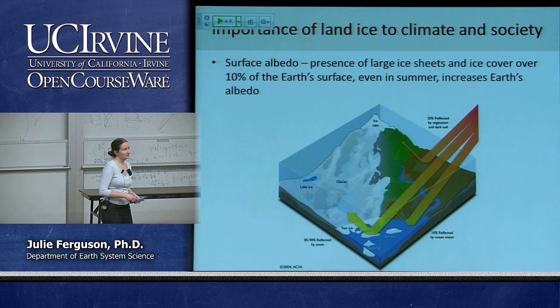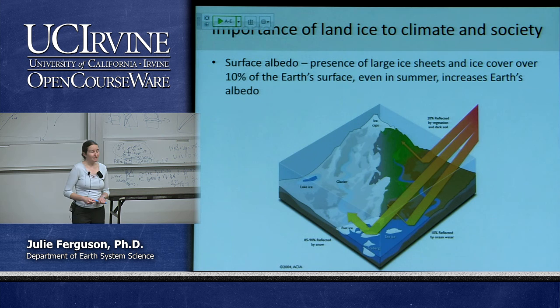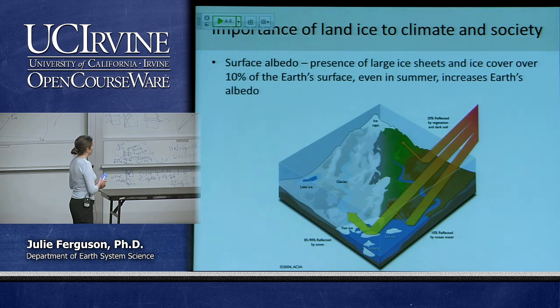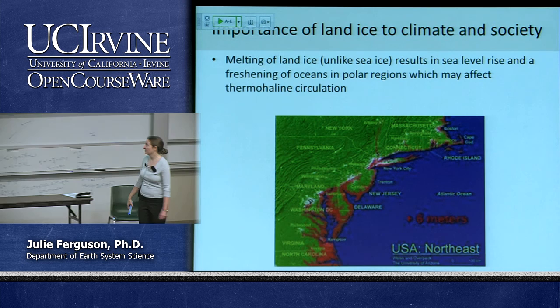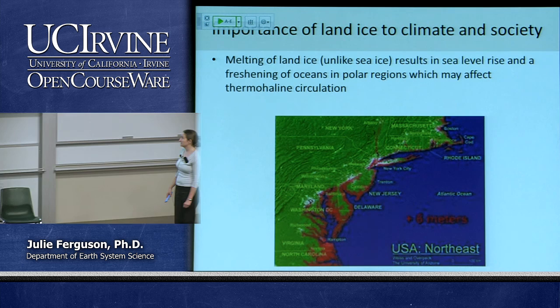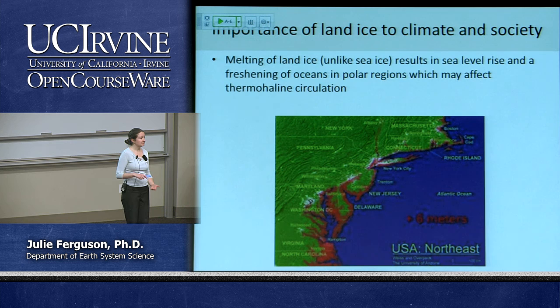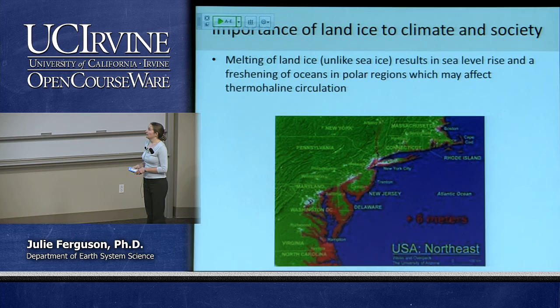Why should we care? Land ice covers about 10% of our surface area, so it has a large impact on albedo. Melting or growing that ice changes our albedo. There's also the effect on sea level — this map shows how much of Delaware, Washington, and North Carolina would be flooded by six metres of sea level rise, which is how high sea level was 120,000 years ago when temperatures were roughly the same as today.